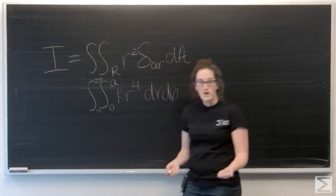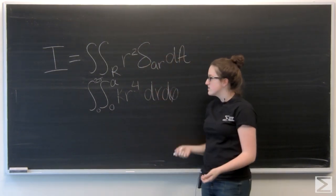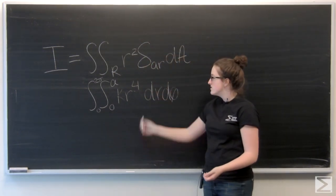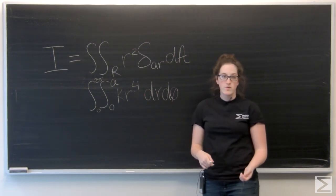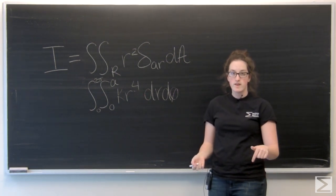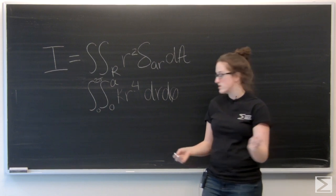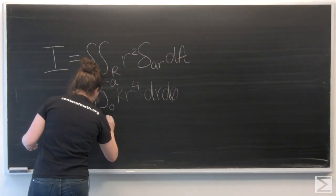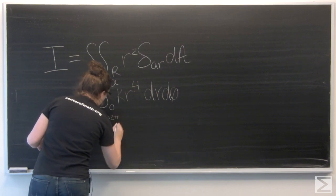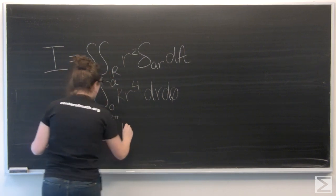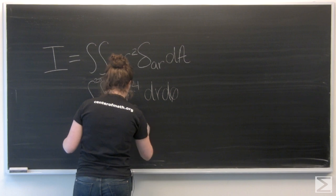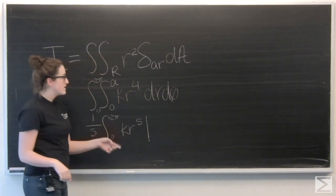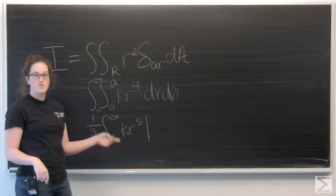Okay, let's go ahead and start integrating. First, we're going to go with respect to r. So treat k like a constant and the integral of r to the fourth is going to be one-fifth r to the fifth. I'm going to pull that one-fifth out. And then I want to evaluate this from r equals 0 to r equals a.